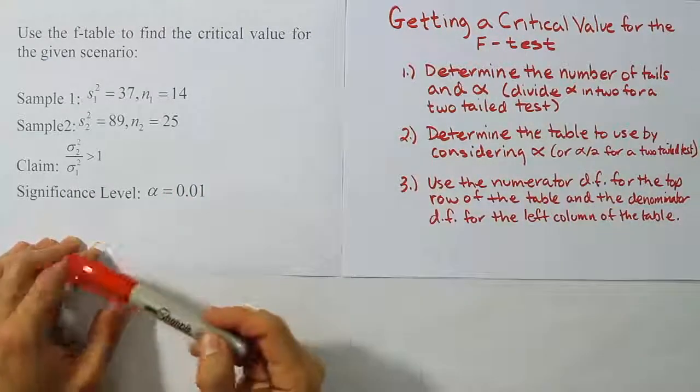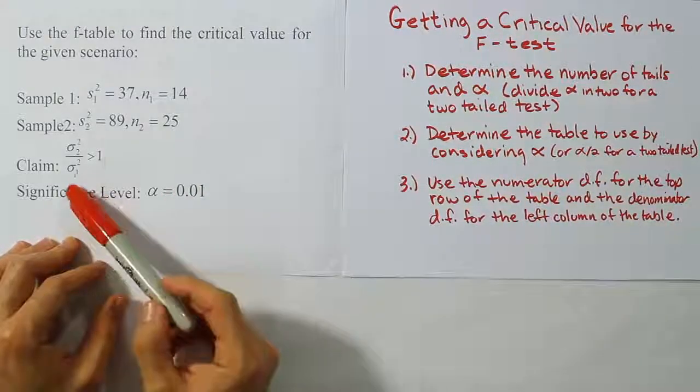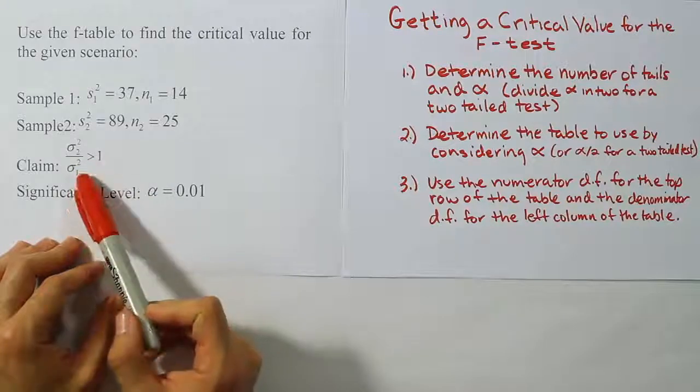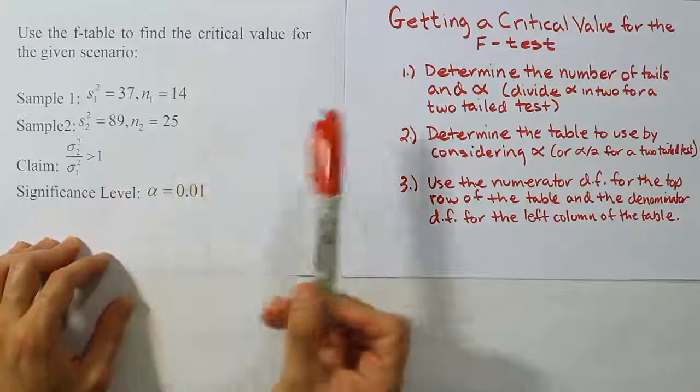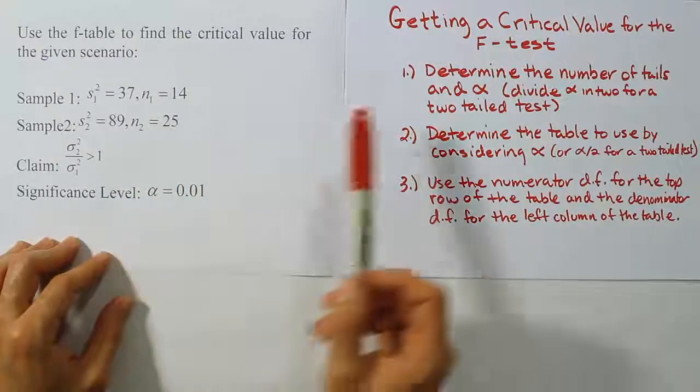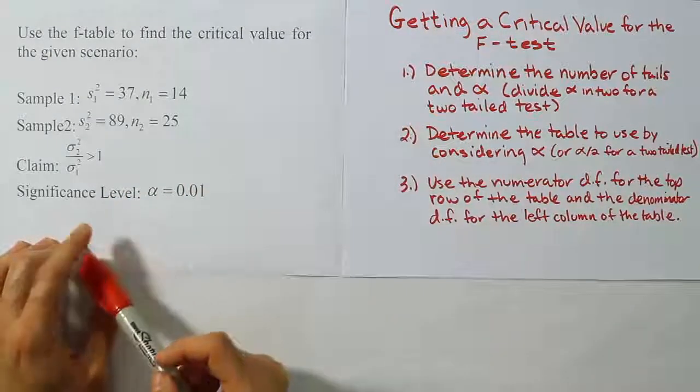These are the steps to find a critical value for an F-test. When you're running a hypothesis test to compare two population variances, you're conducting an F-test. In order to determine the critical value, you have to use the following three steps. So I've written them out for us so you can take notes on them as we do the problem.